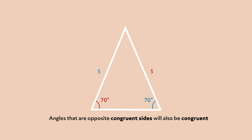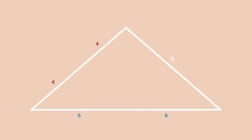For our final property, let's look at this triangle. Here, we have a line segment in green that connects the midpoint of one side to the midpoint of another side. Whenever you do this in a triangle, the line segment you created is always half the length of the side you didn't bisect. Not only that, it's parallel to that side too.